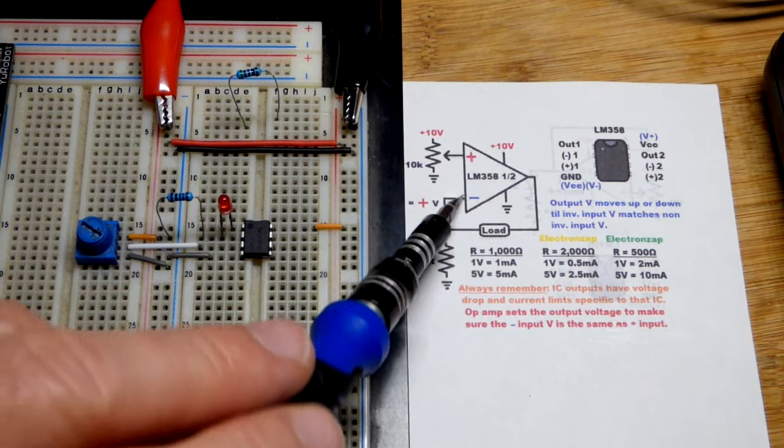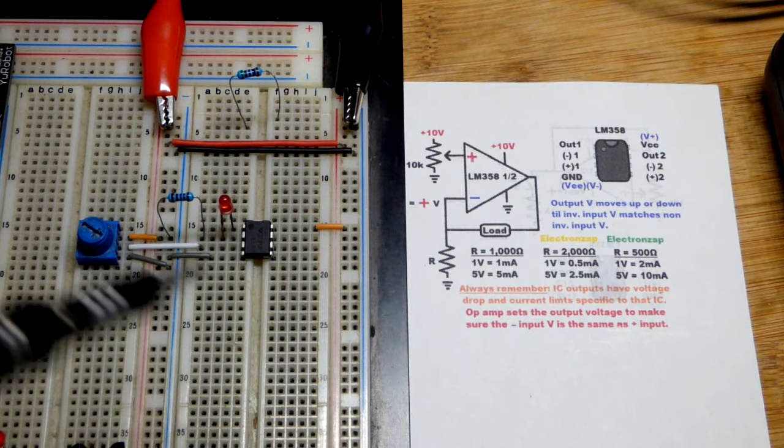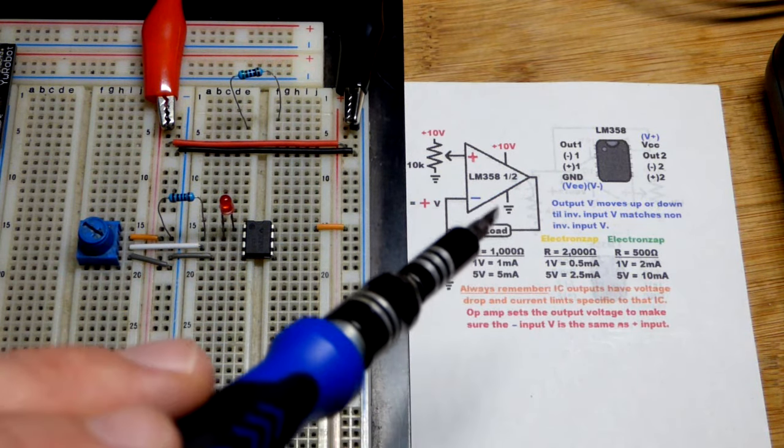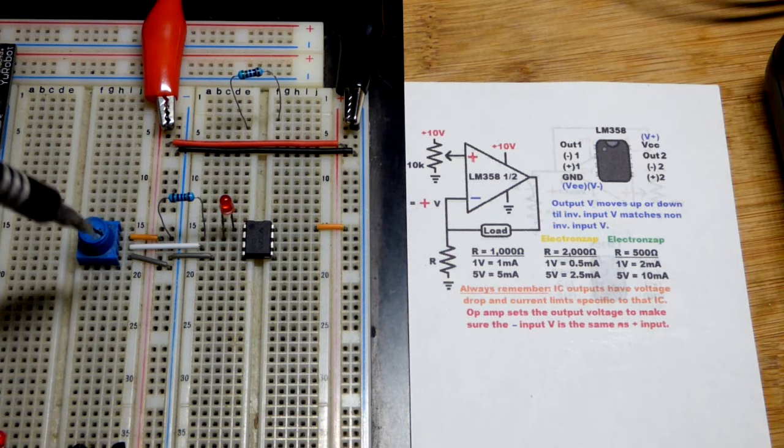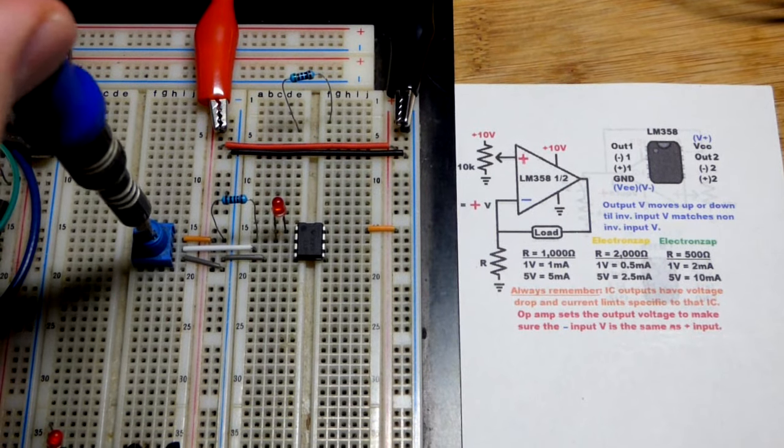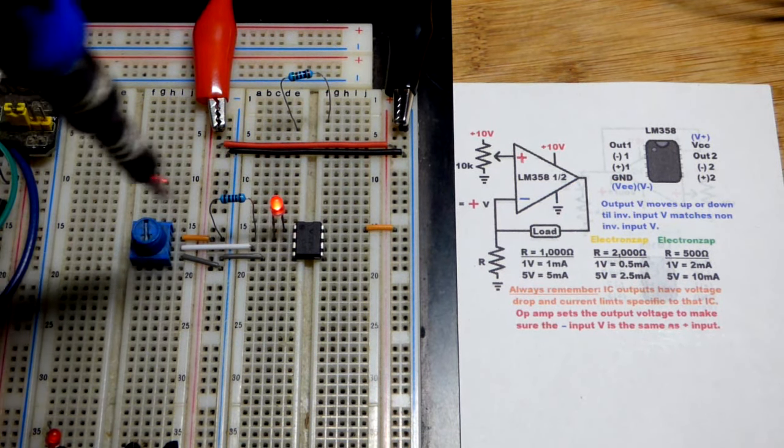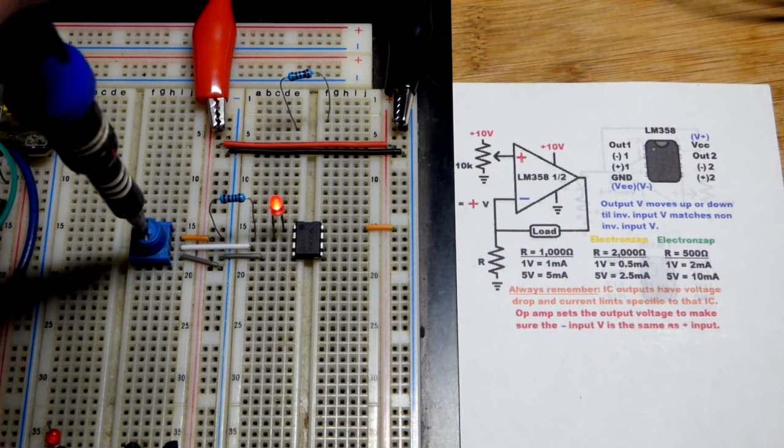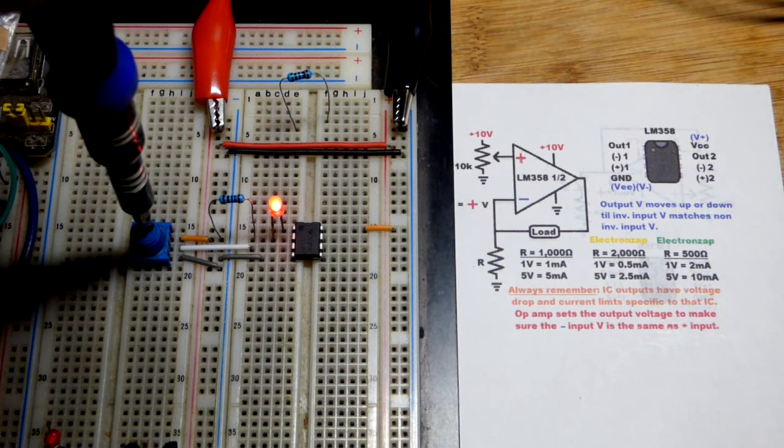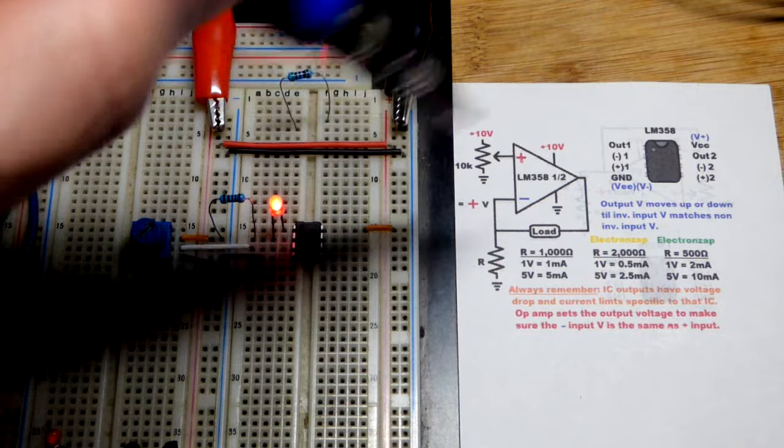So now in this video we're going to take a quick look at the op amp current source. I'm using an LM358 right there. To make it more effective you use transistors and stuff, but this is still very important to understand if you want to make useful circuits. We have the trim pot here. Ultimately the trim pot sets the voltage across the current setting resistor. It's a 1000 ohm resistor right there.